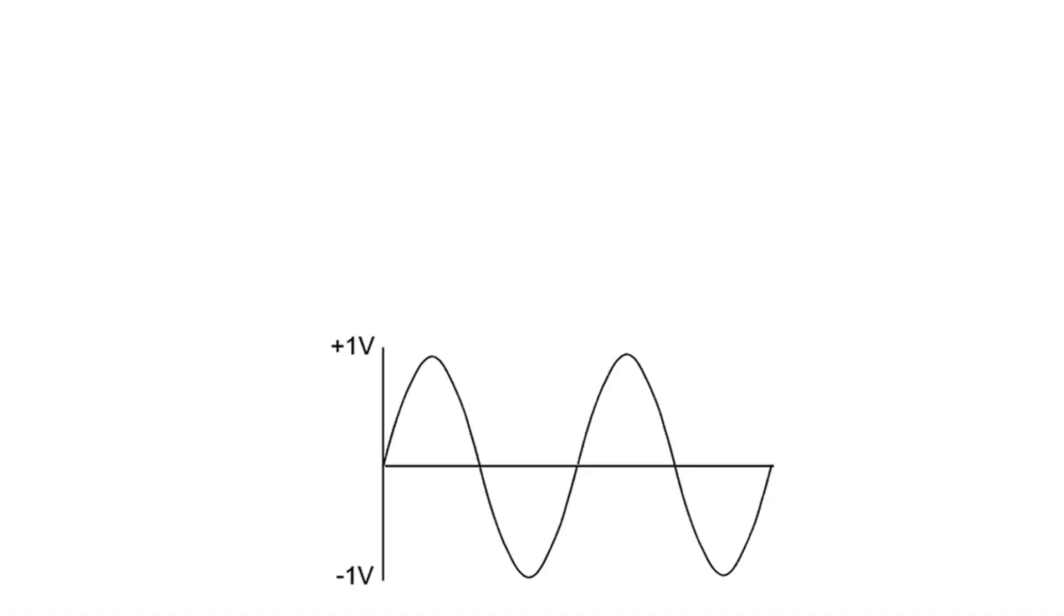In the context of electrical engineering, the oscillations that we care about are voltages moving back and forth. For example, here's a sine wave that is oscillating from plus 1 volt to minus 1 volt back and forth.